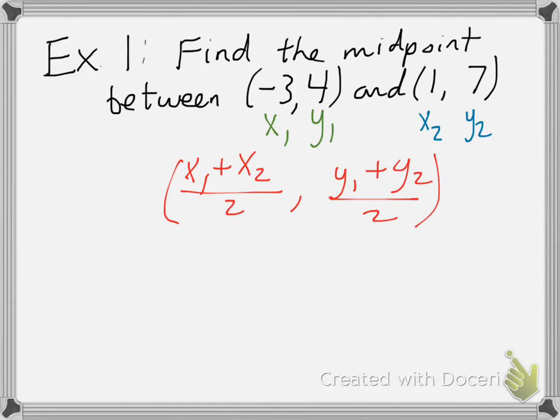Notice this formula is also formatted as a point with parentheses, comma, and another parentheses, because that's how your answer will look. So, let's just put in the numbers. For my x's, my x1 is negative 3, and my x2 is 1. And my y's are, y1 is 4, and y2 is 7.